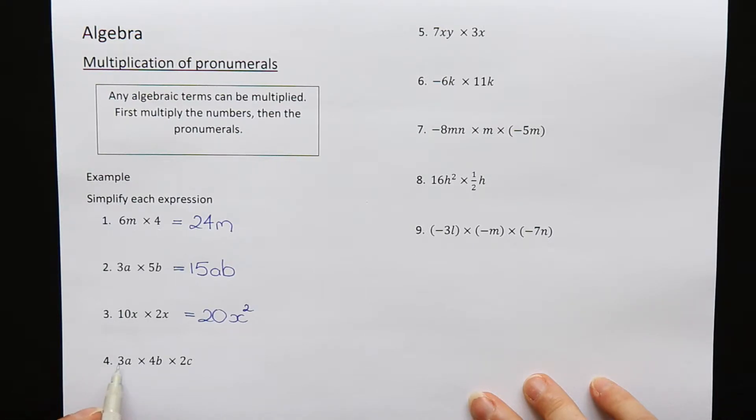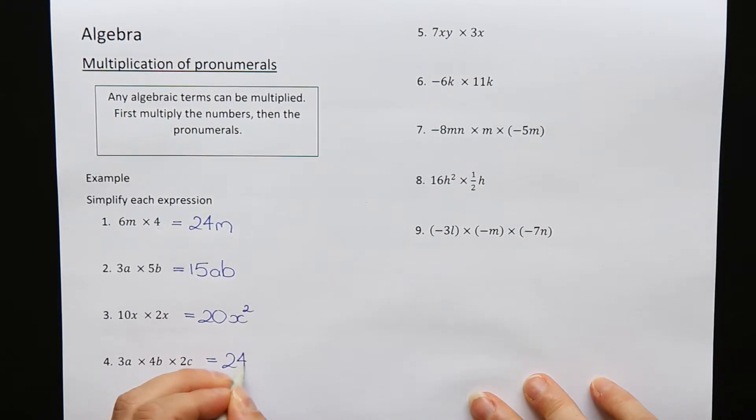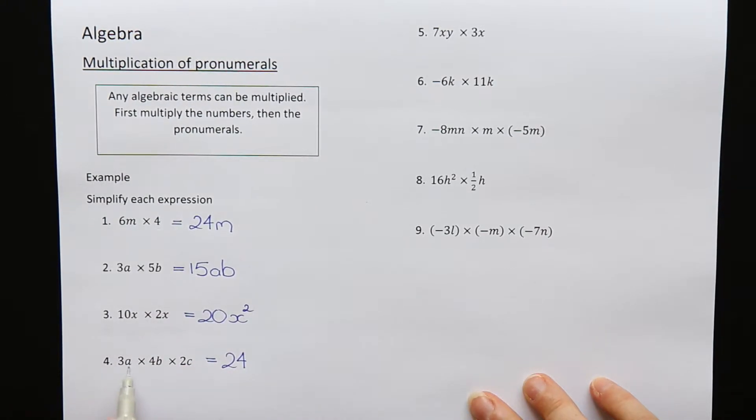Question 4: 3a times 4b times 2c. We can have as many things multiplied together as we like. The rules still work. Multiply all the numbers: 3 times 4 is 12, times 2 is 24. And all the letters a, b, c are multiplied here at the end.